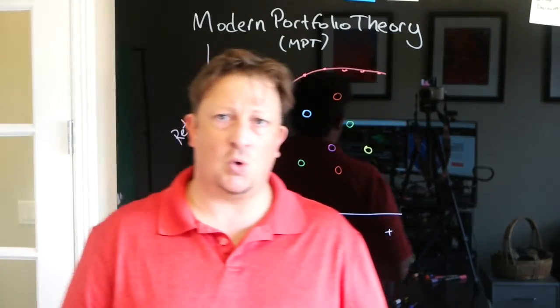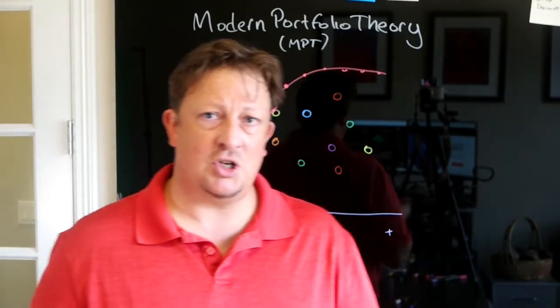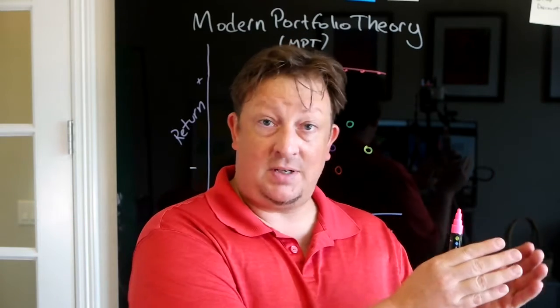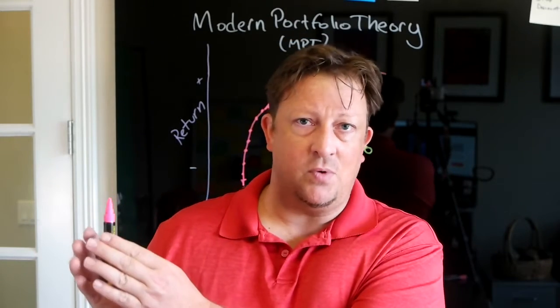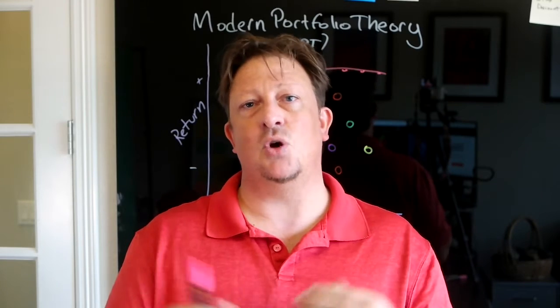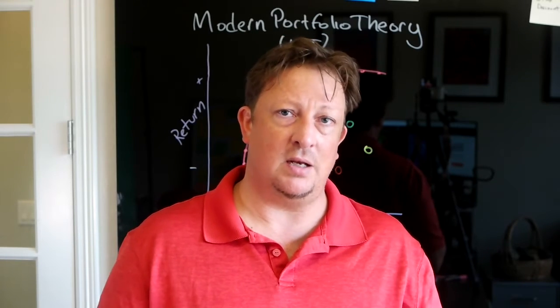But these assets also have these different interrelationships with each other. And we usually measure that through a correlation. A correlation goes from negative 1 to positive 1. Negative 1 is a perfect negative correlation, positive 1, perfect positive correlation. And a 0 correlation means that they don't relate to each other. They're unrelated, they're uncorrelated.